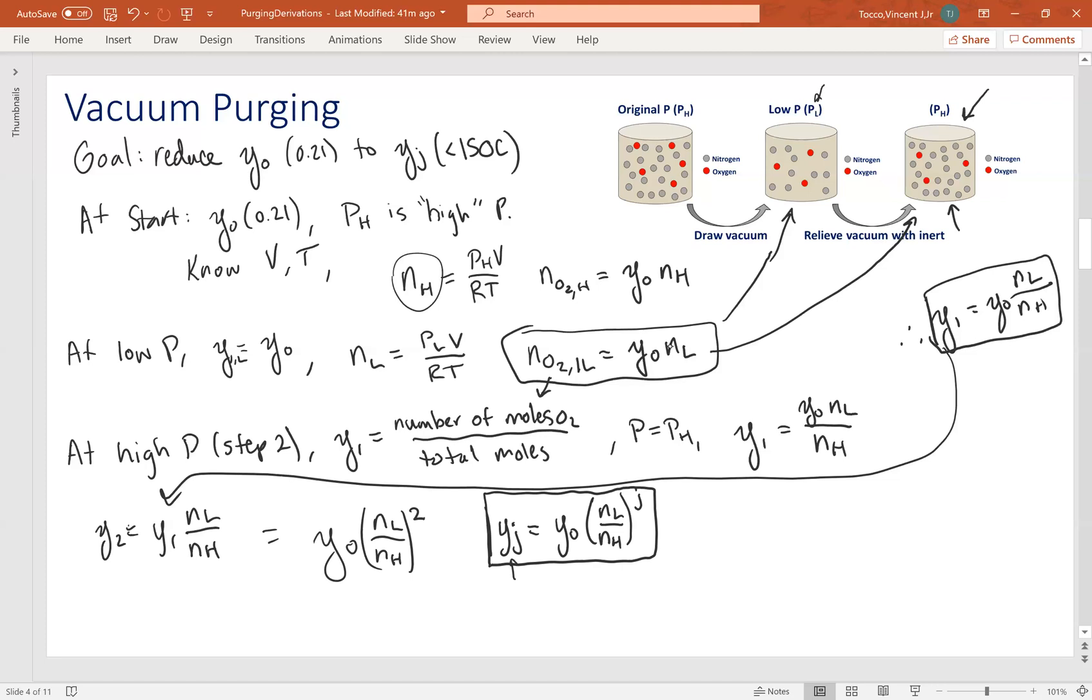I should also mention that when you're operating your process, you don't necessarily have a dial on the outside that tells you how many moles you have inside. So because volume and temperature are constant, you can also say that this is equal to Y0 times PL over pH to the Jth power. So either one of these two will work. The second form is a little bit more practical because you have a pressure reading typically on your vessels.